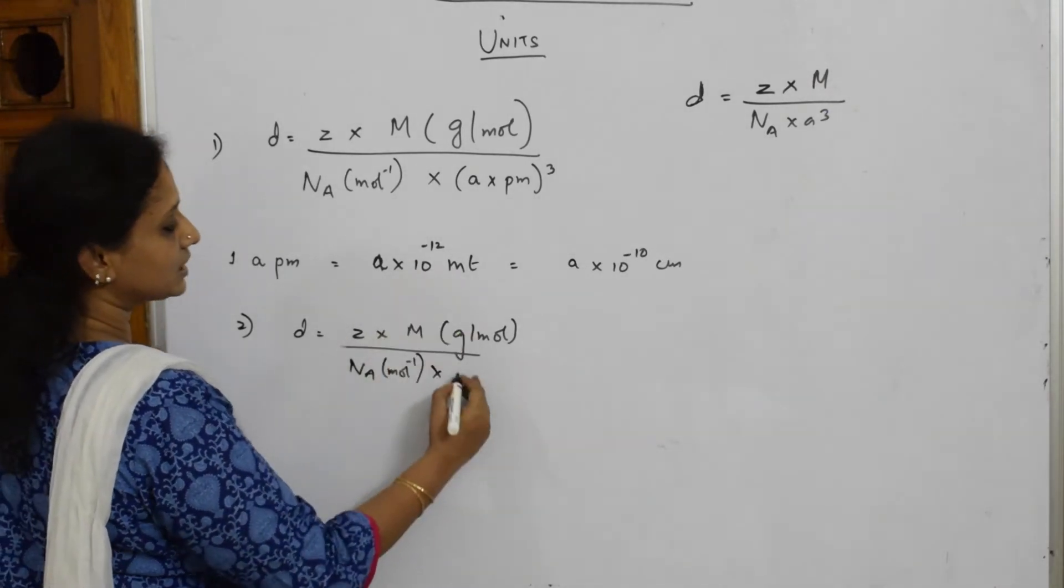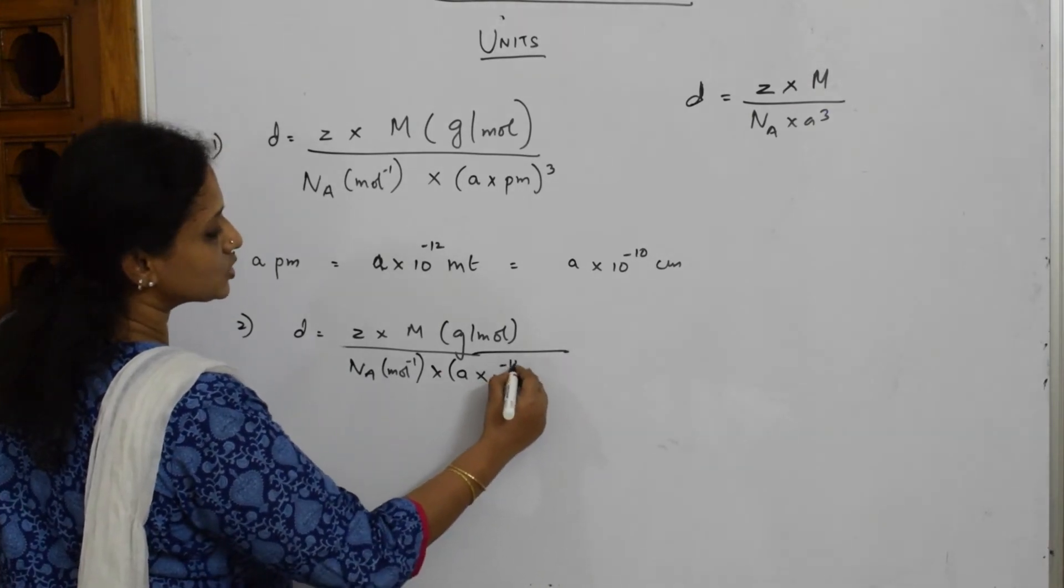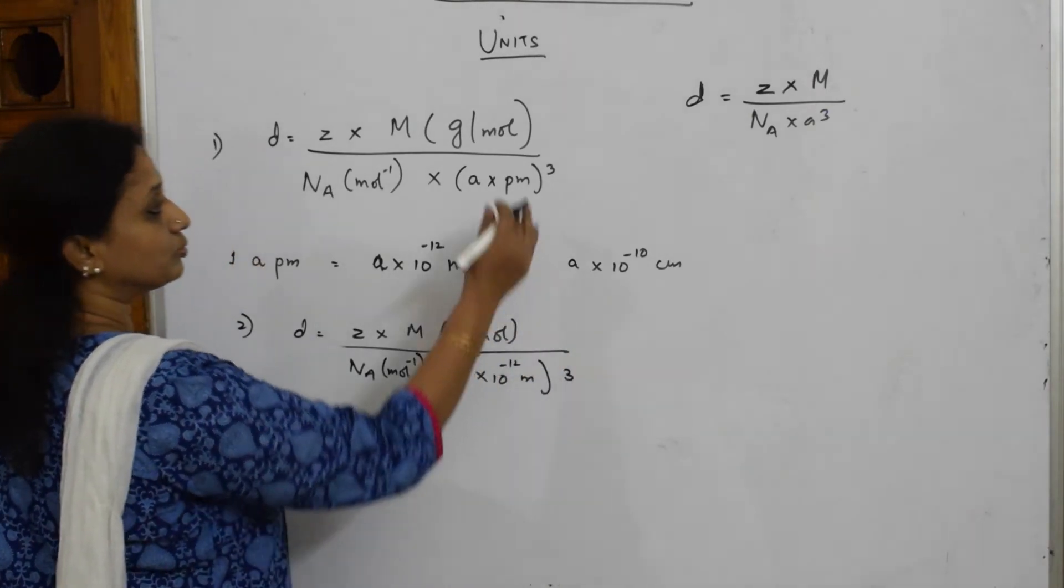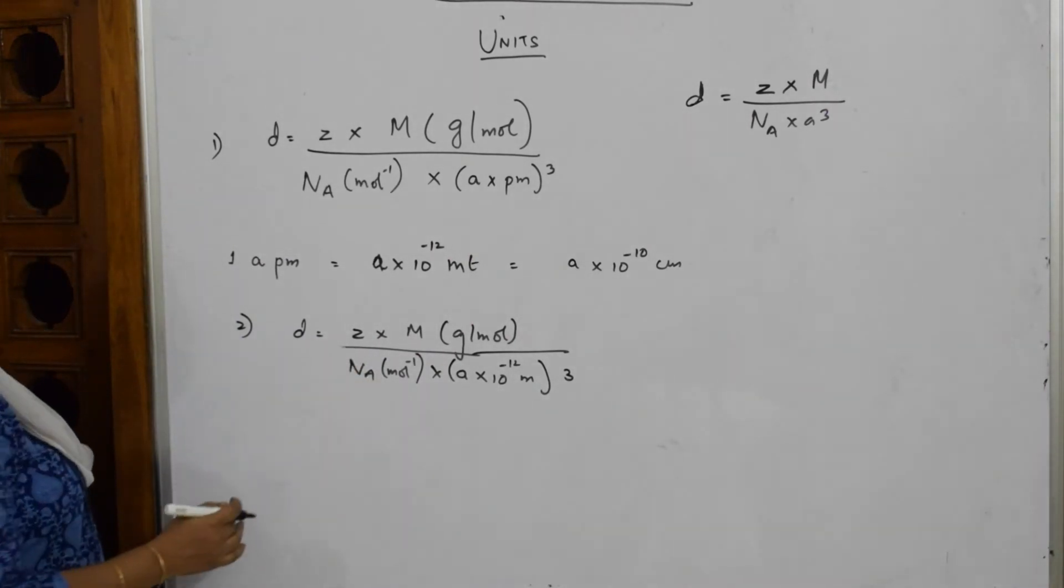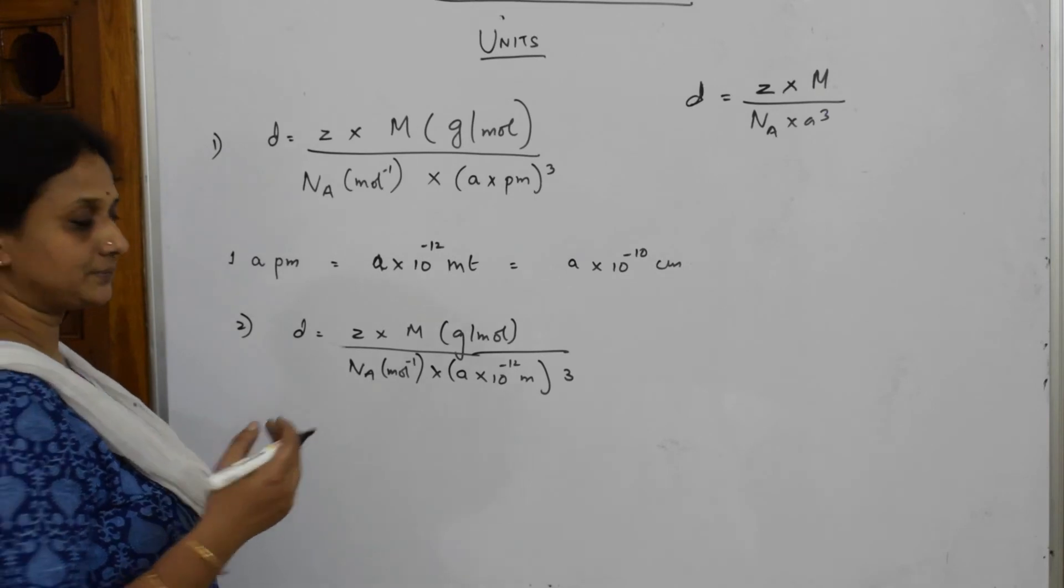Now what is A in terms of - I am writing in terms of A into 10 raised to minus 12 meter whole cube, because volume cube.